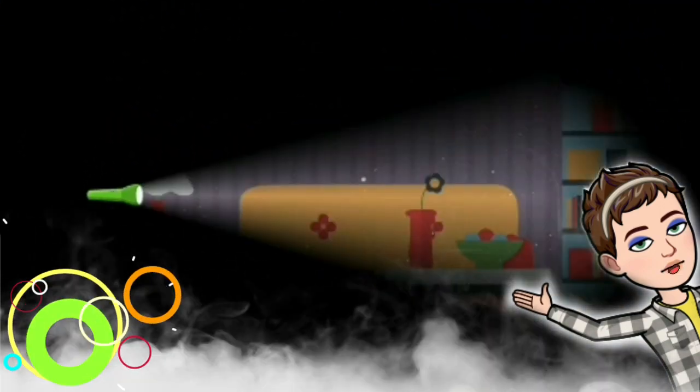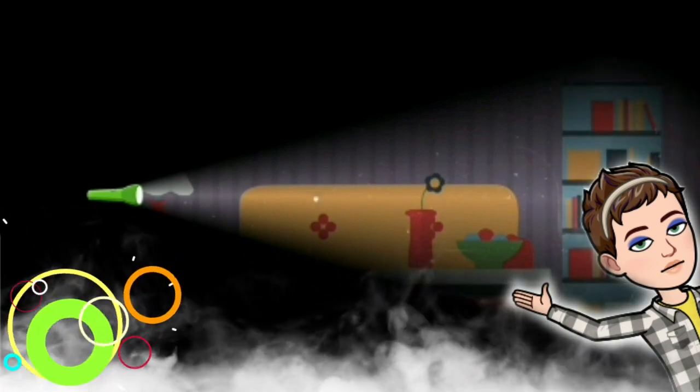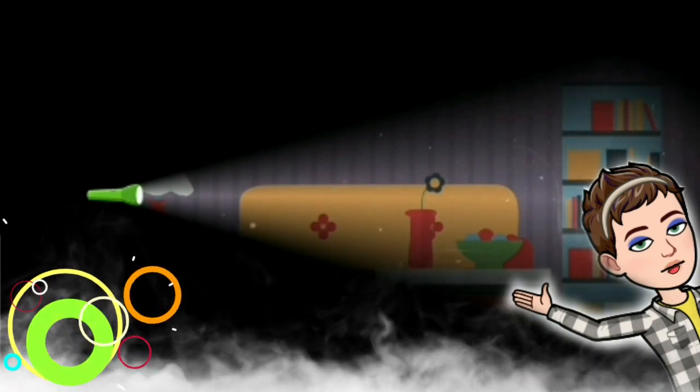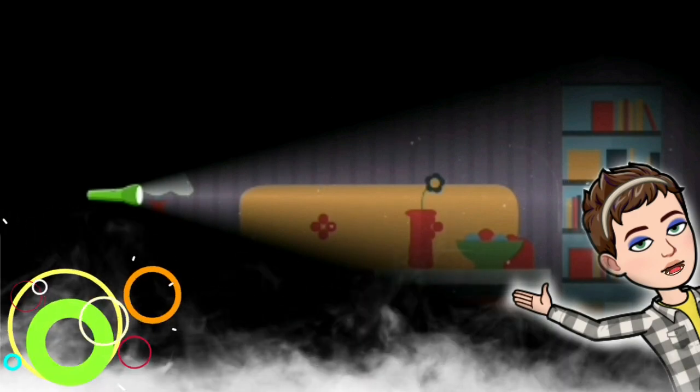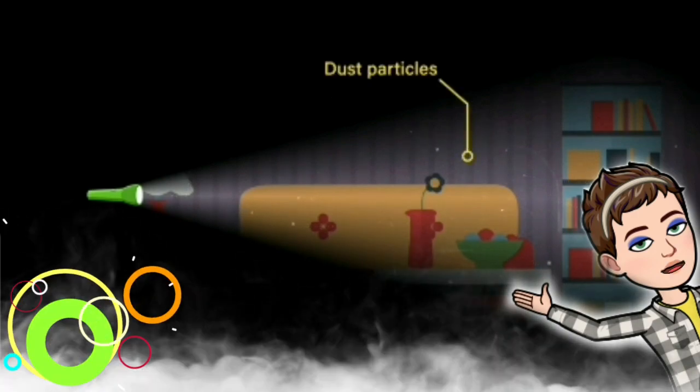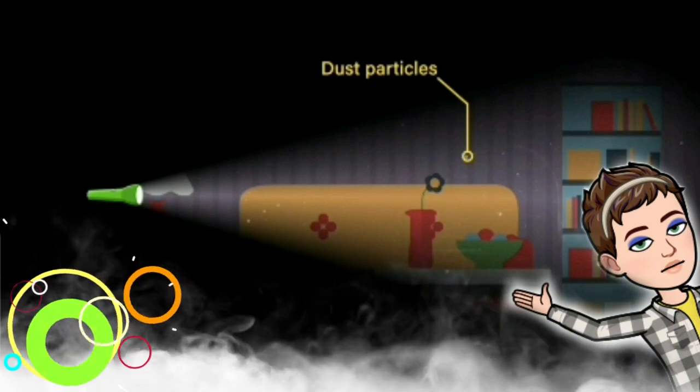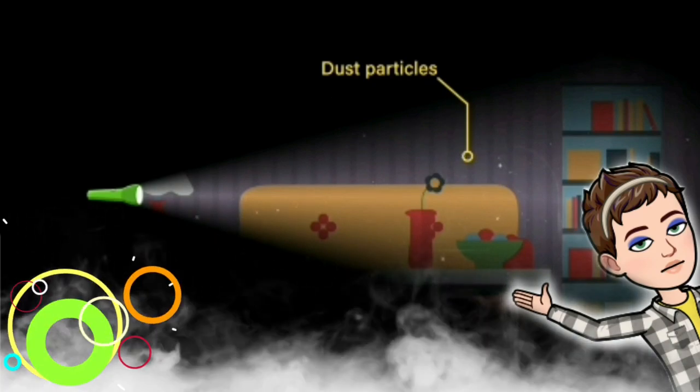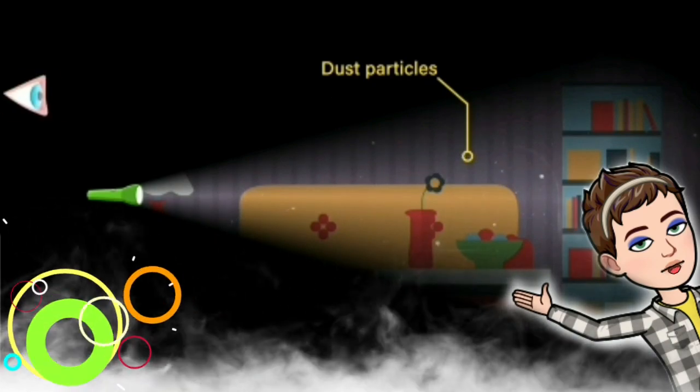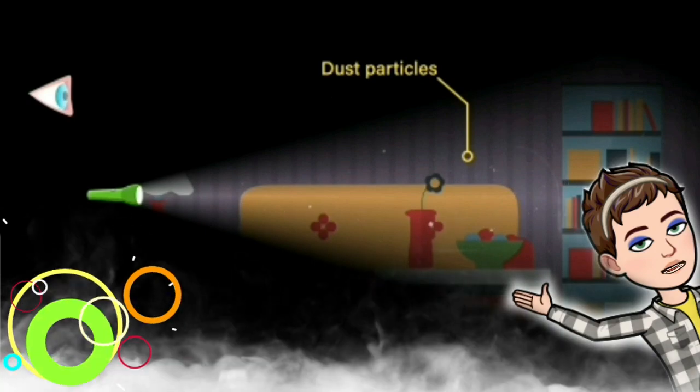Step inside the dark room, light up a torch, and point it at the distant wall. Look carefully at the path of the light coming from the torch. You will see tiny dust particles in the air. What is the reason for this? Why are you able to see these particles?